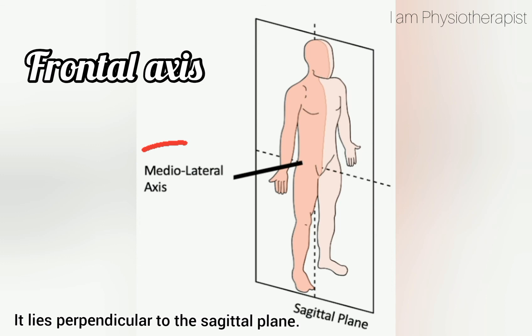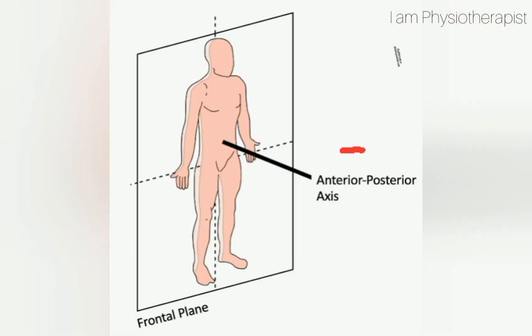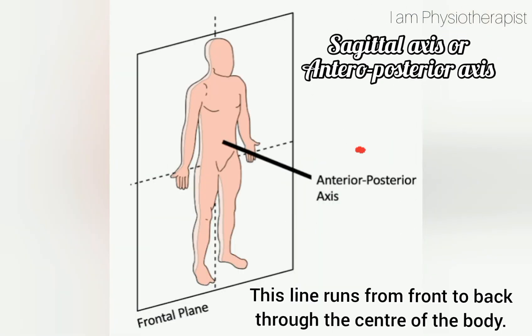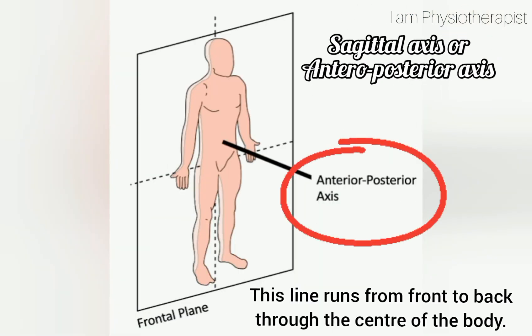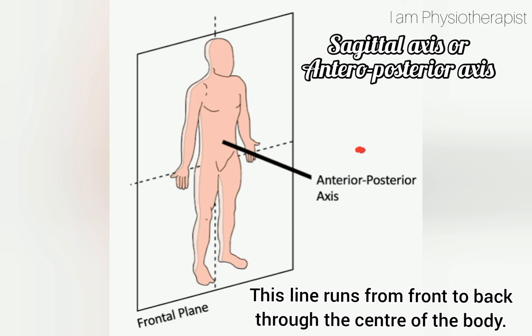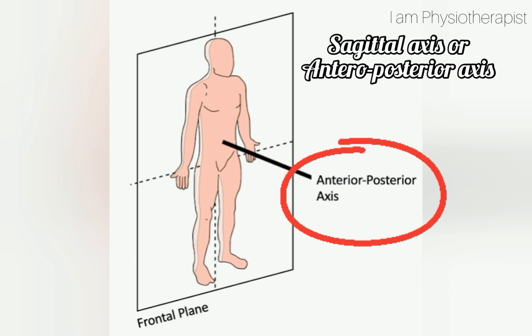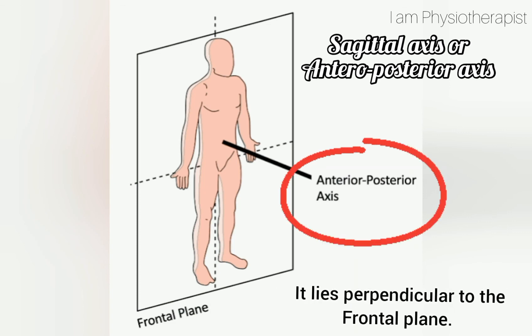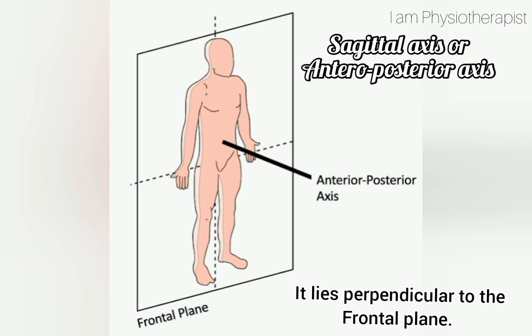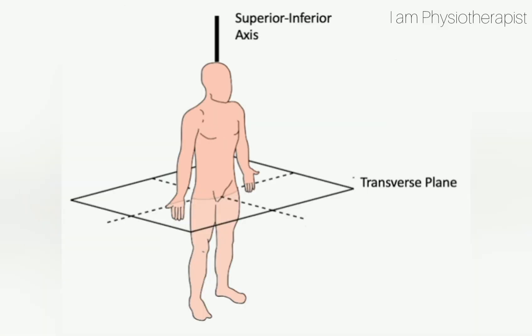Sagittal axis, also called the anteroposterior axis: this line runs from front to back through the center of the body. It lies perpendicular to the frontal plane.